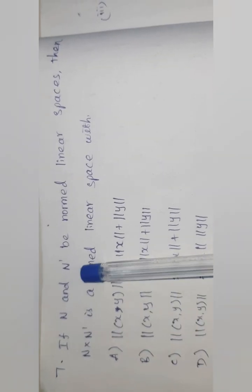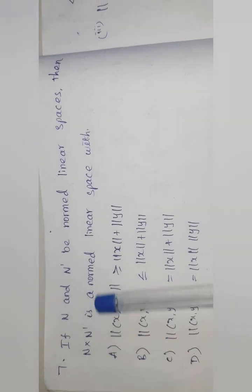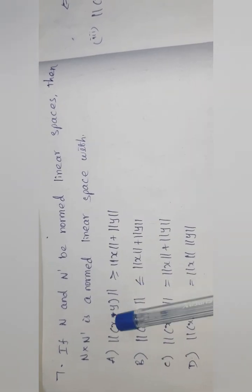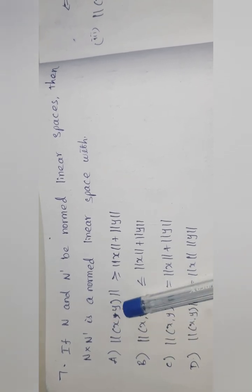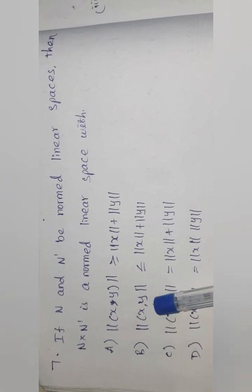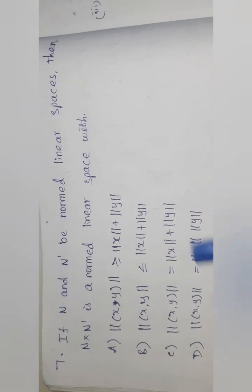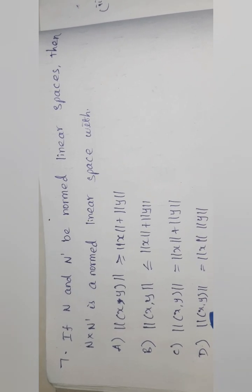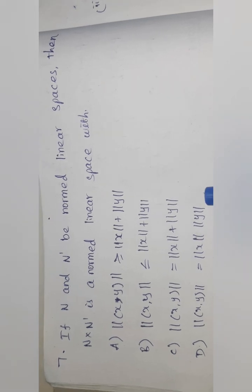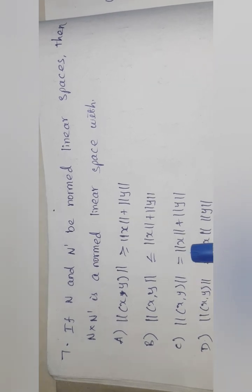Seventh question: if N and S are normed linear spaces, then N×S is also a normed linear space. Here are four options — A: norm(x,y) > ||x|| + ||y||; B: norm(x,y) < ||x|| + ||y||; C: norm(x,y) = ||x|| + ||y||. The result for normed linear spaces gives norm(x,y) = ||x|| + ||y||, which is the correct answer.